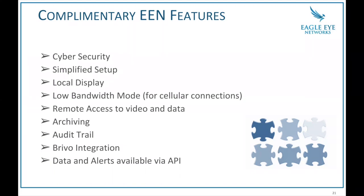Another key feature is remote access. One customer — a grocery store chain — is planning to deploy this solution to screen their employees, who work with food. One concern they raised is that if someone has an elevated temperature, the shift supervisor might say 'I really need this person today' and pretend it never happened. The remote access to video and data is very important so that corporate can watch what's happening on-site. Corporate can also receive alerts — not just the person holding a handheld system. In larger corporations, they want checks and balances, and we can help provide that.